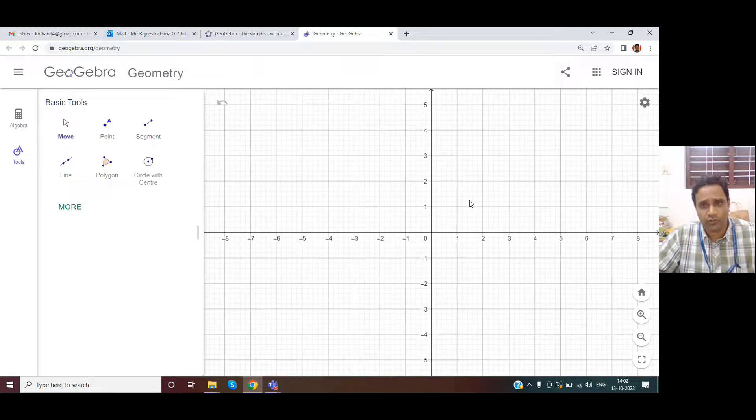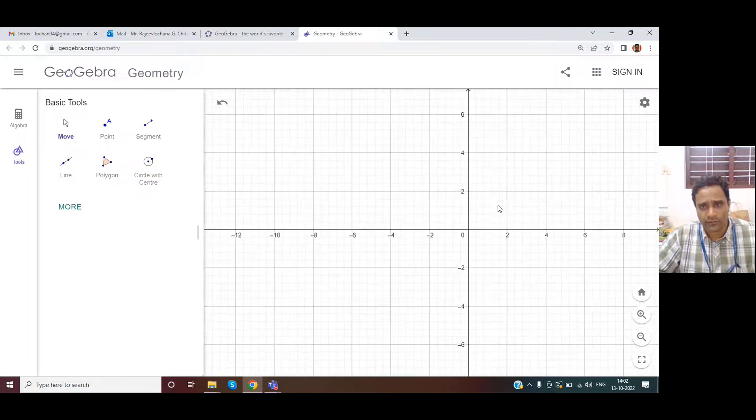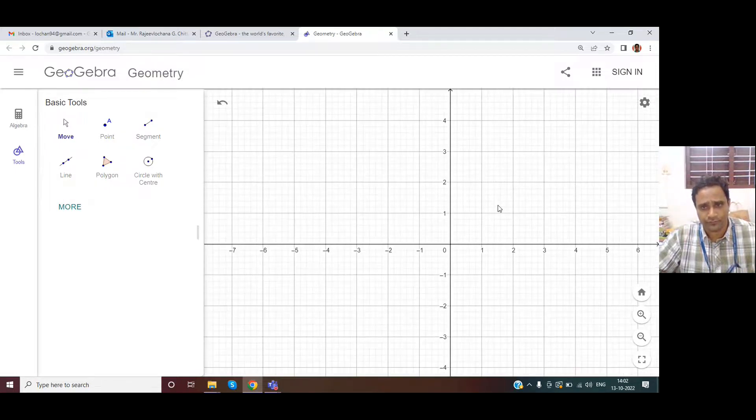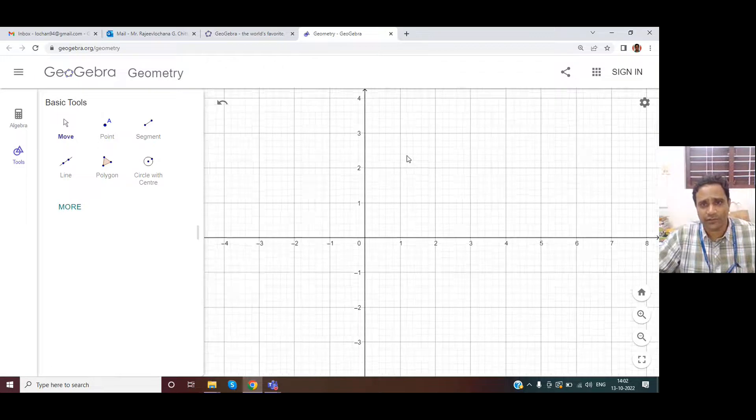It's a graph sheet and using the mouse you will be able to pan and also zoom in and zoom out. The x-axis and y-axis are already shown to you.